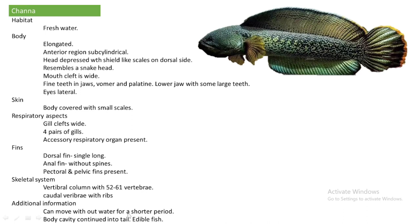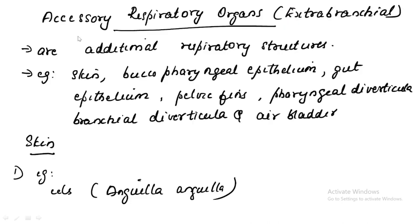Channa can move without water for a short period. The body cavity is continuous into the tail. It is an edible fish. We now move to an important section in this chapter: the accessory respiratory organs.